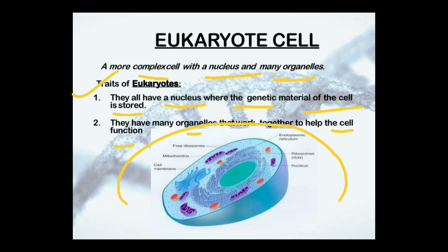This is the detailed structure of eukaryotic cells. It contains the endoplasmic reticulum, ribosomes, a very intact nucleus, free ribosomes, mitochondria — which is the powerhouse of the cell — and the outer cell membrane.